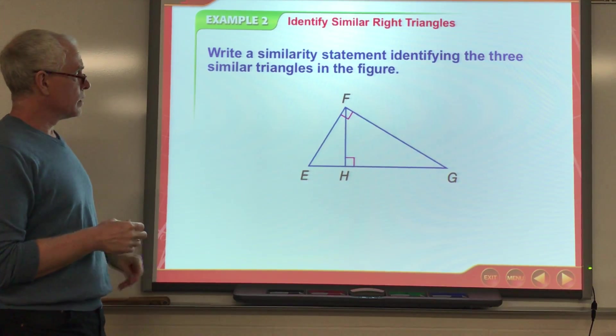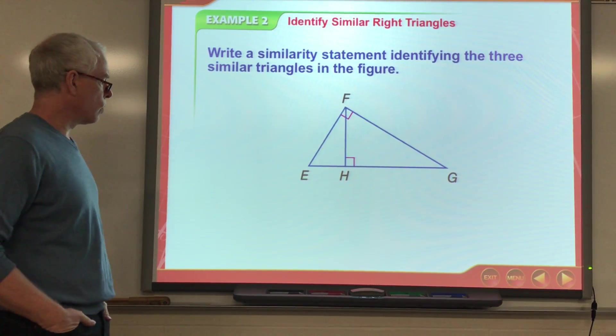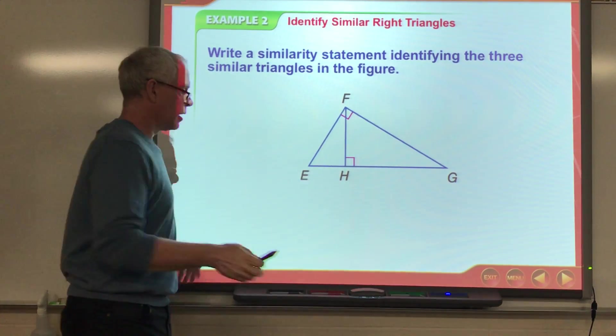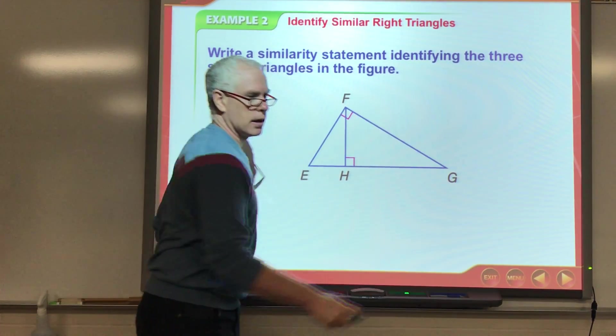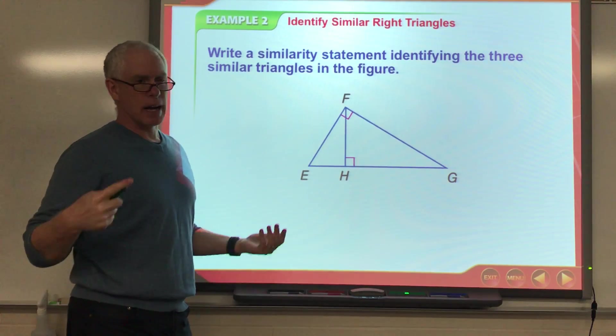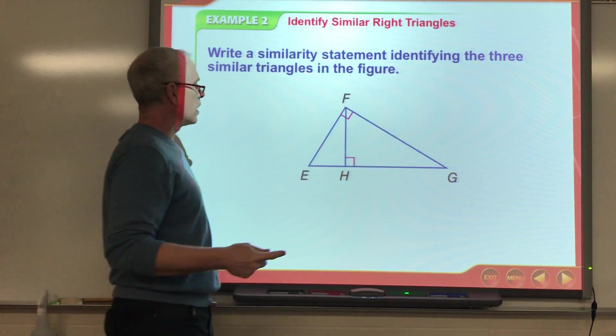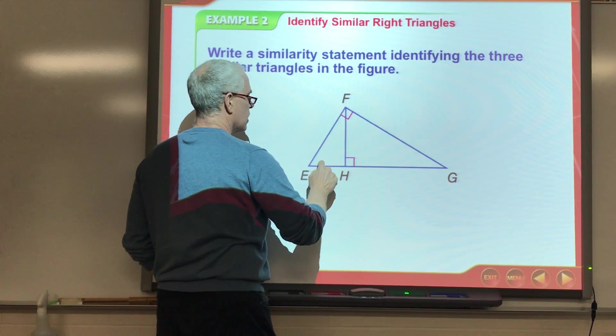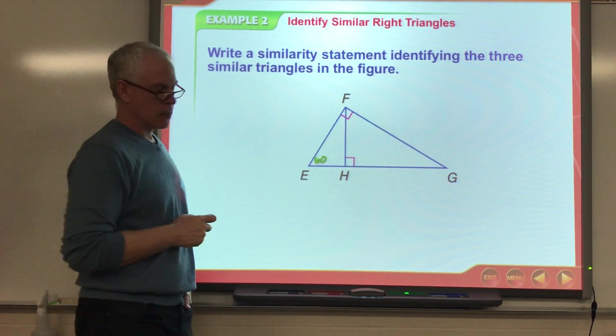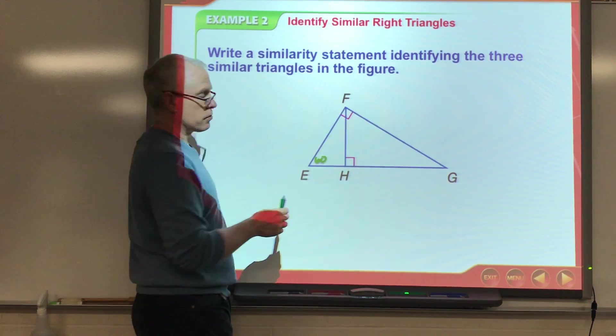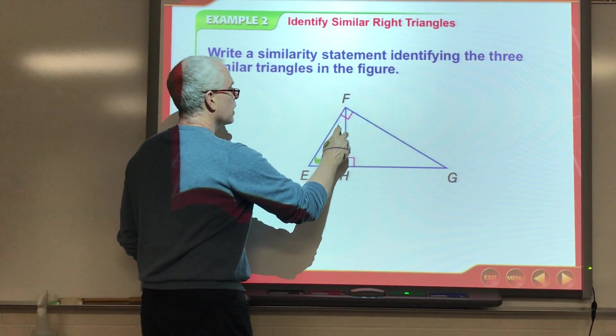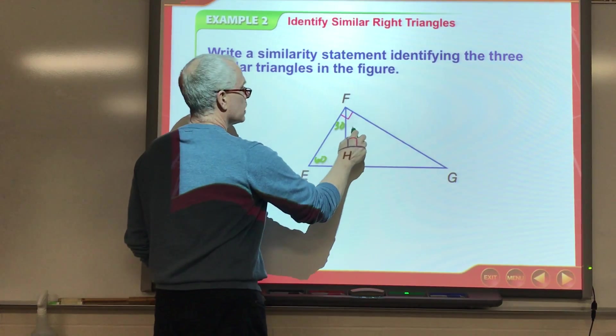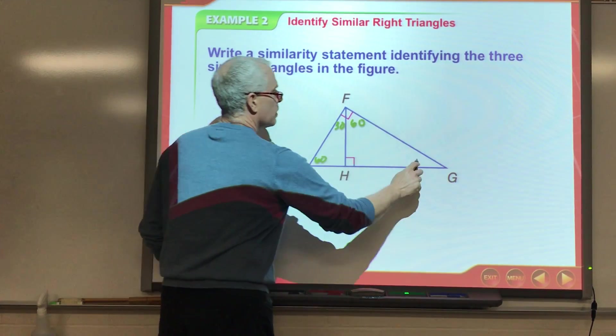Okay, write a similarity statement to identify these. So, what I tend to do, you guys, is I pick and make up an angle. Okay, and then I know that all the angles have to add up to 180 in a triangle, and so then I can write the similarity statement better. So, let's say I say this is a 60 degree angle here. Well, then this little triangle on the left, since it's a right triangle, this is 90, this one has to be 30. And if this is 30, and that's a 90 degree angle up there, this one has to be 60, which makes this one 30.